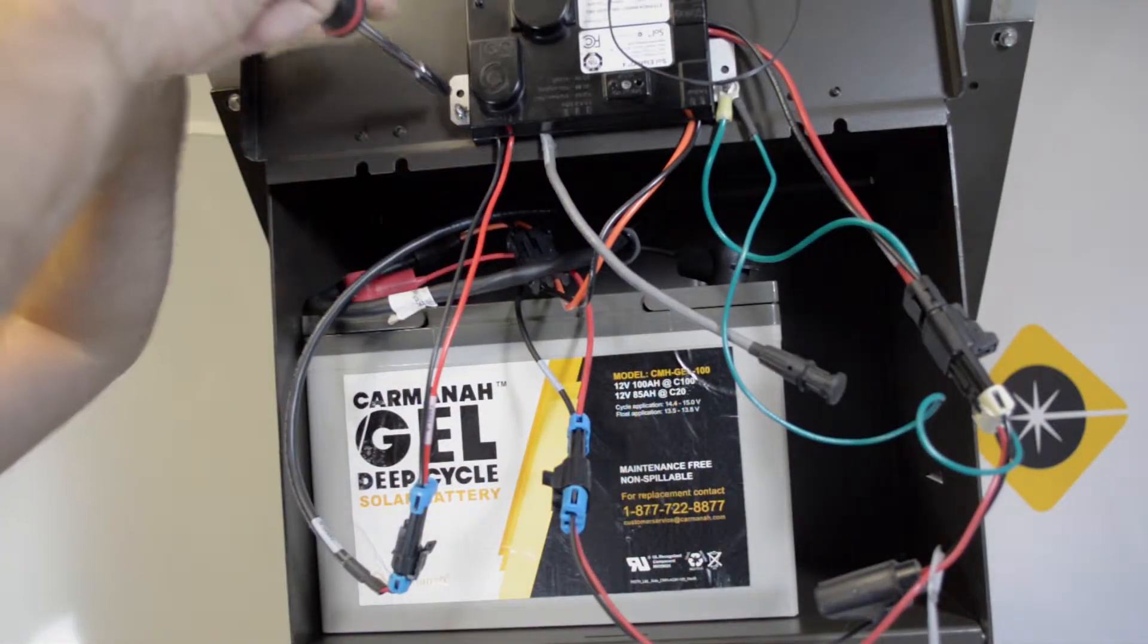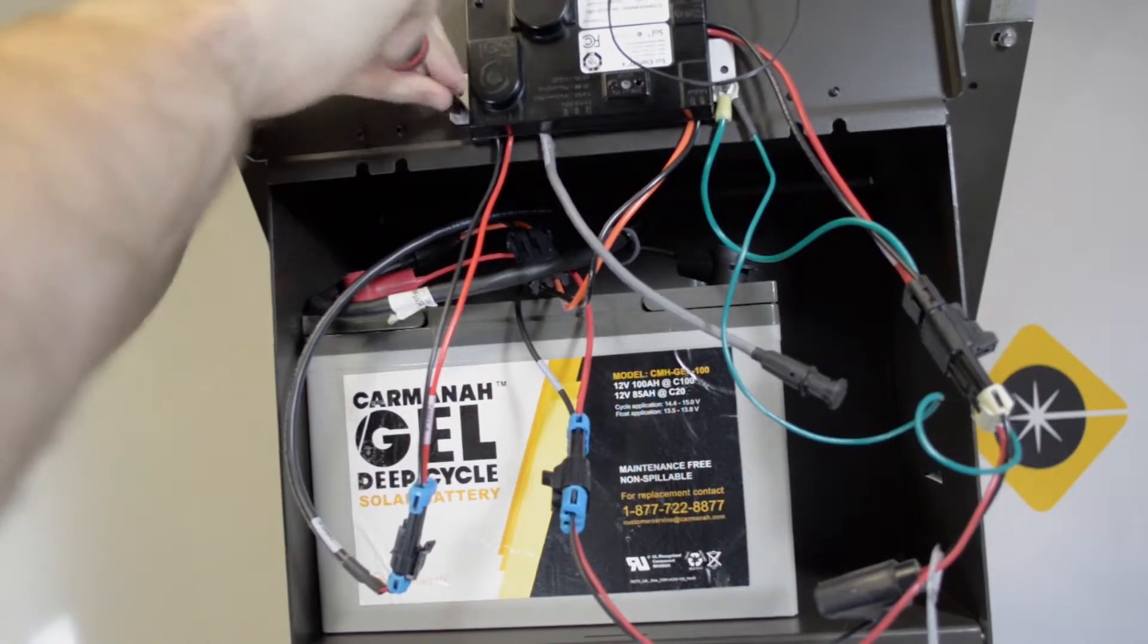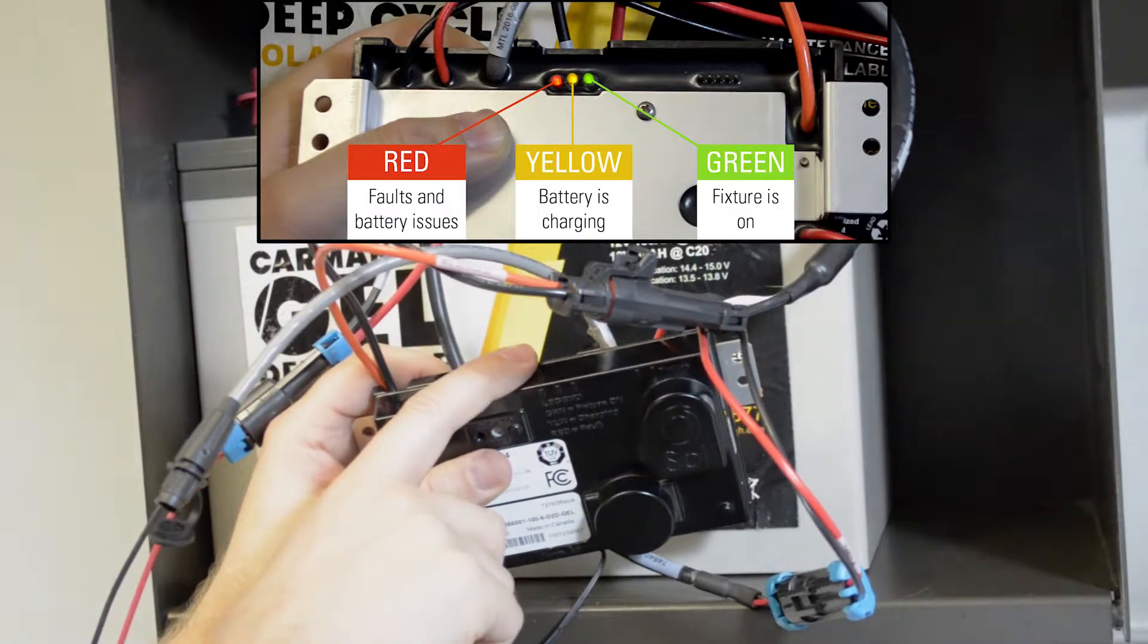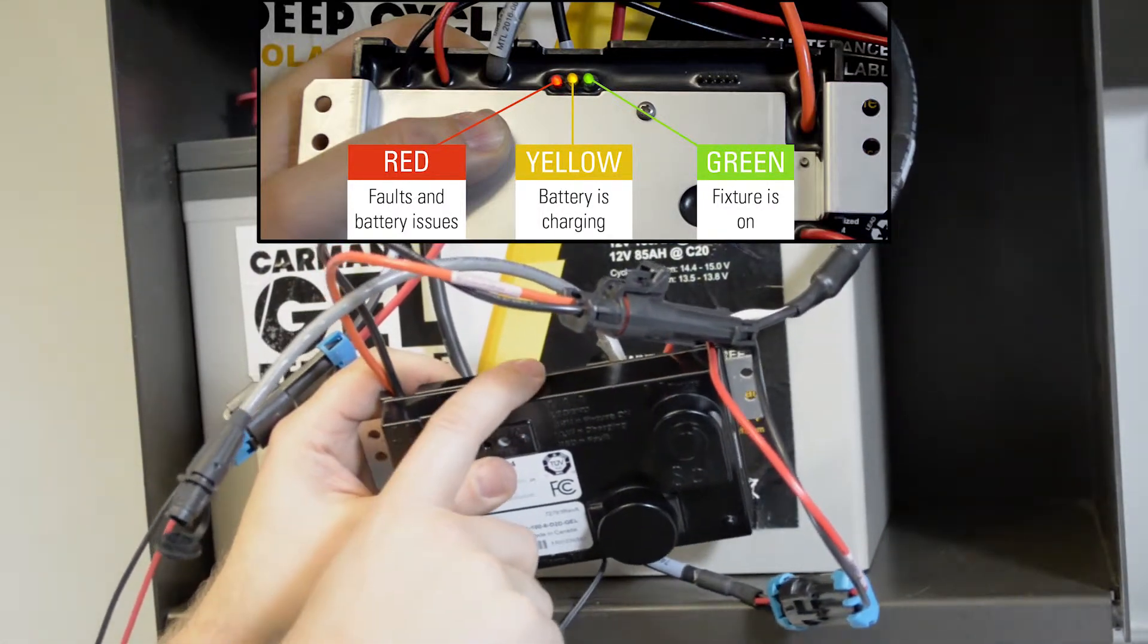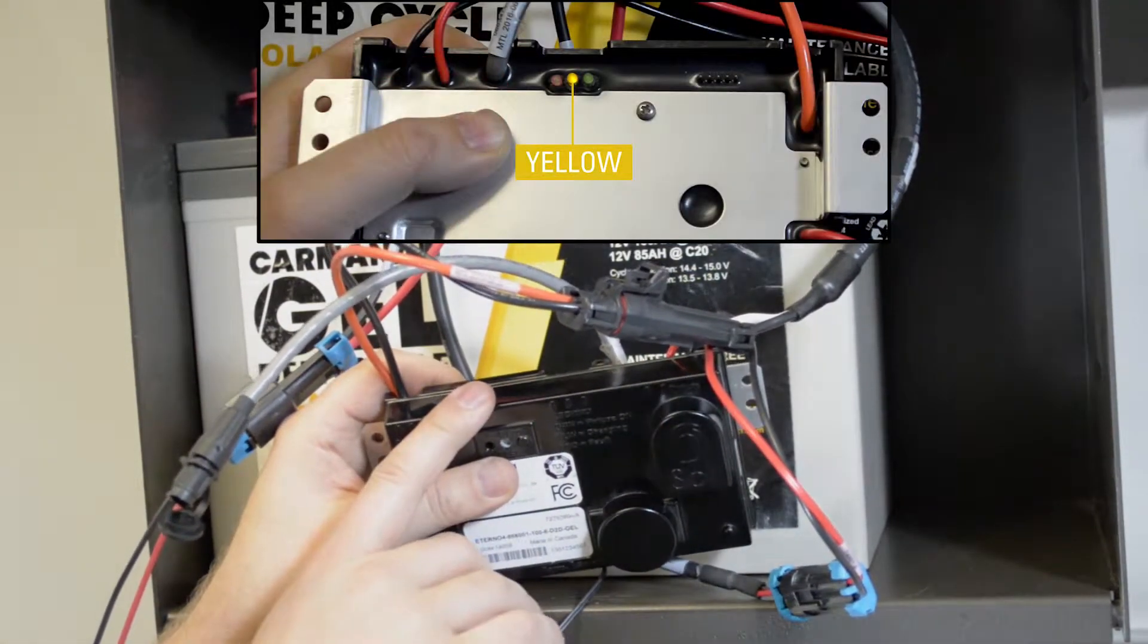Sometimes it's easier to remove the EMS to see them better before continuing with the troubleshooting. Use a quarter inch nut driver to remove the bolts securing the EMS. There are three indicator lights on the back of the EMS. Green represents the fixture, yellow represents charging, and red represents faults or issues with the battery.